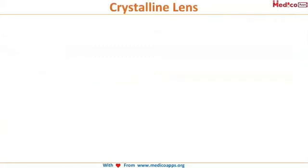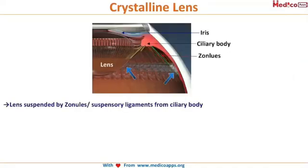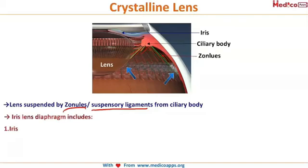The lens is present in the patellar fossa, suspended by zonules or suspensory ligaments. As seen in the image, the ciliary body forms ligaments attached to the lens to suspend it. The iris, ciliary body along with the zonules, and the lens together form the iris lens diaphragm.